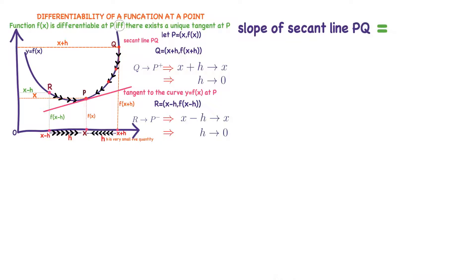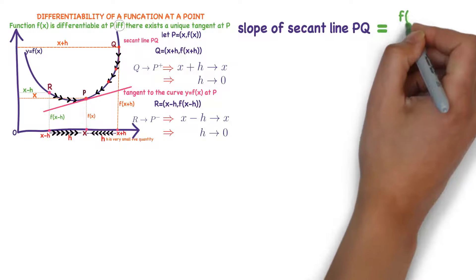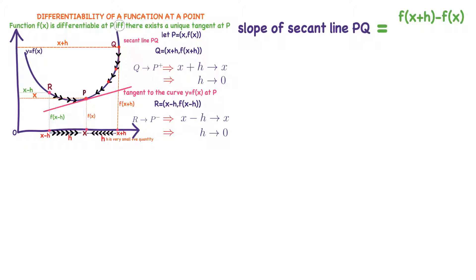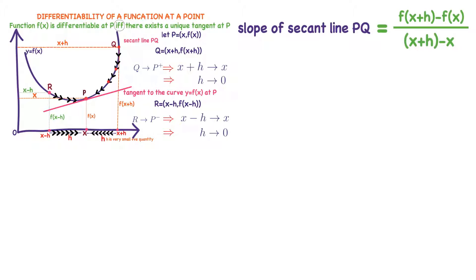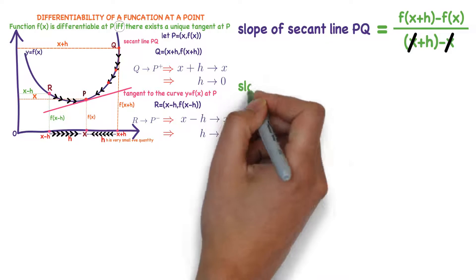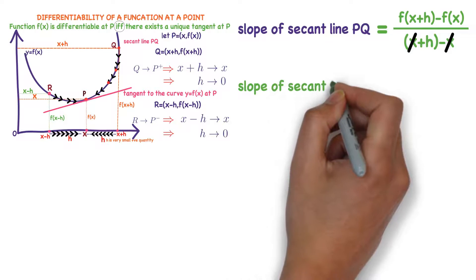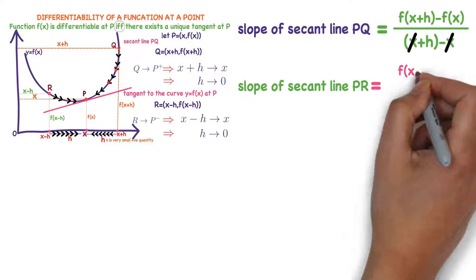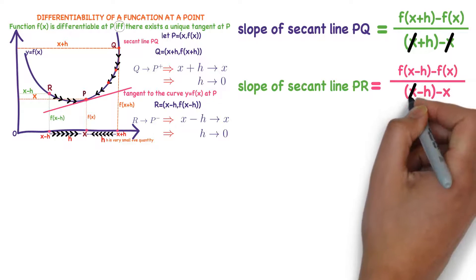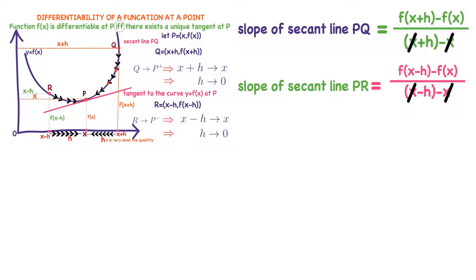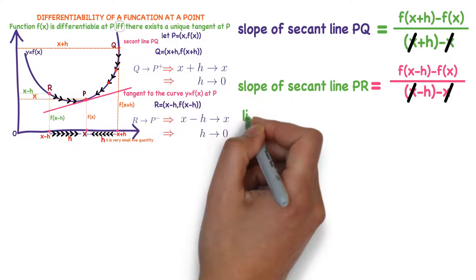What is the slope of secant line PQ? Using the slope formula (y₂−y₁)/(x₂−x₁) with points P and Q, we get: [f(x+h) − f(x)] / [(x+h) − x], which simplifies since the x terms cancel. Similarly, the slope of secant line PR using points P and R is: [f(x−h) − f(x)] / [(x−h) − x], and again the x terms cancel.